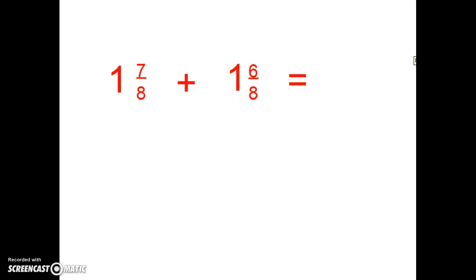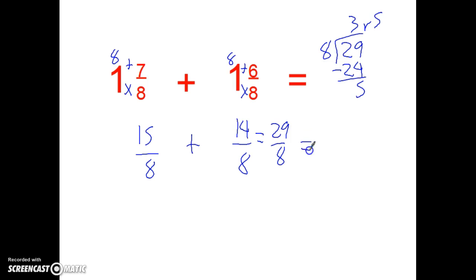Give you one more of the addition ones to try out. My denominator is going to be 8's. 1 times 8 is 8. Plus 7 gets me to 15. 1 times 8 is 8. Plus 6 gets me to 14. 15 plus 14 is 29 eighths. 29 divided by 8. 3 times. 3 times 8 is 24. Subtract. I get 5. 3 remainder 5. So it equals 3 and 5 eighths.